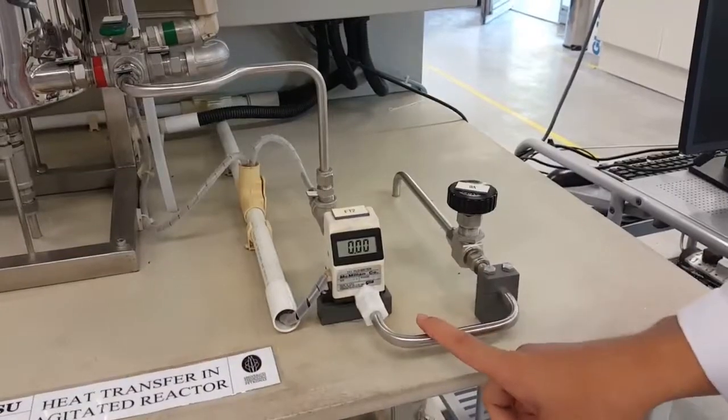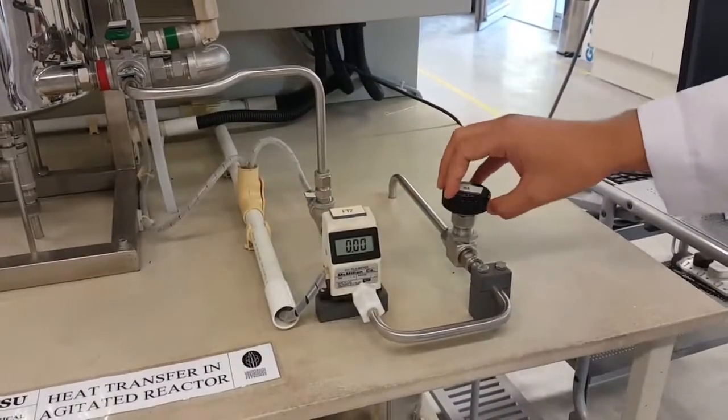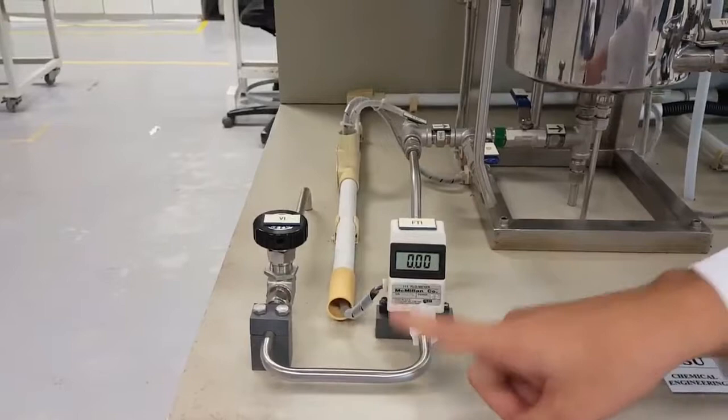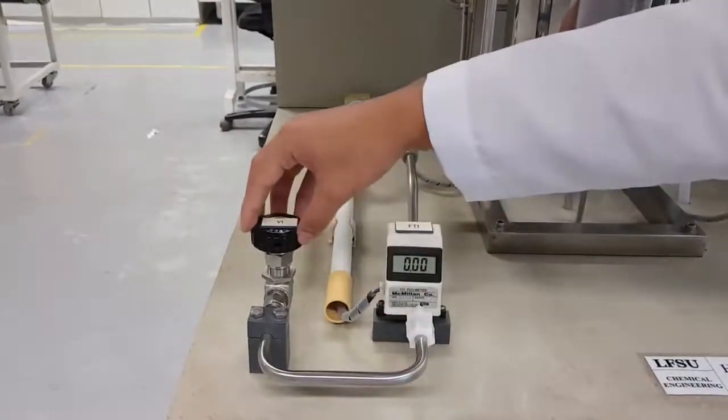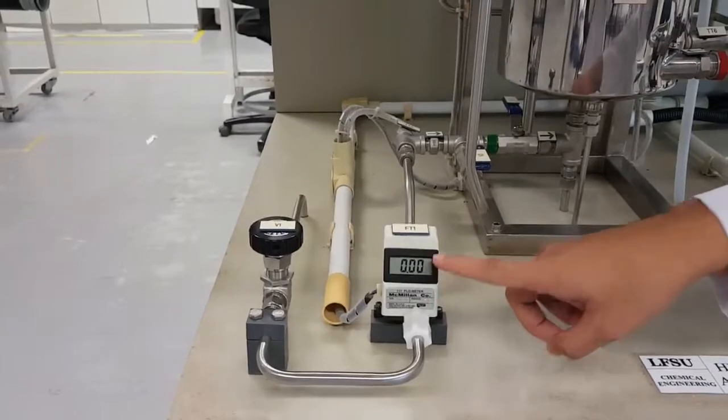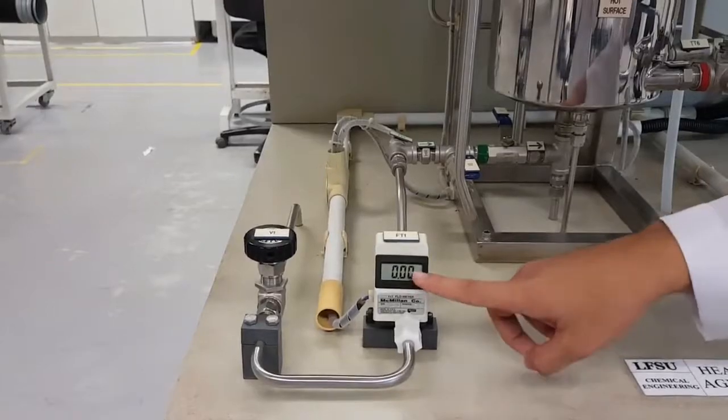So this one is the flow meter for the hot water. And this one is to control the flow rate of the hot water. And same goes to the FD1. But FD1 is for cold water. And this one is the valve that actually control the measure of the flow meter. And we set it at 1.5 LPM.